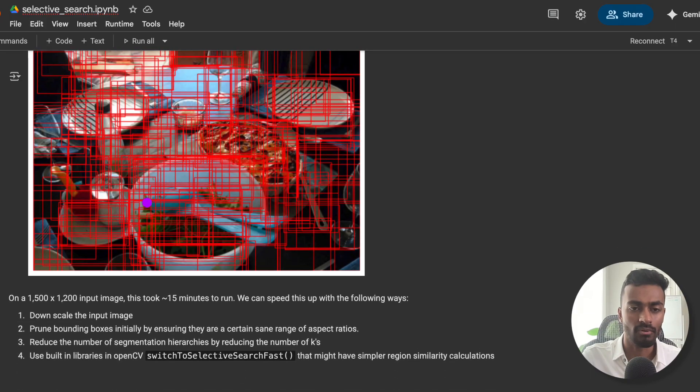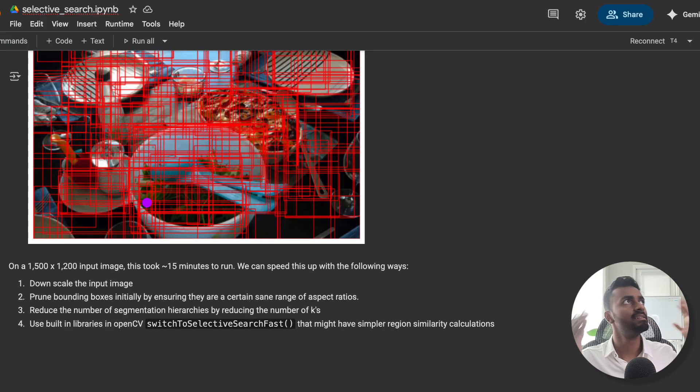Now, one thing that's important to note here is that intuitively, you can imagine that this is actually a very, there's a lot of these segmentations that we're running, and it seems like a very long process. And honestly, it still is kind of a long process. So this is a 1,500 by 1,200 image, and this took 15 minutes to run. But we can actually speed this up, and many speedups have been proposed over time.